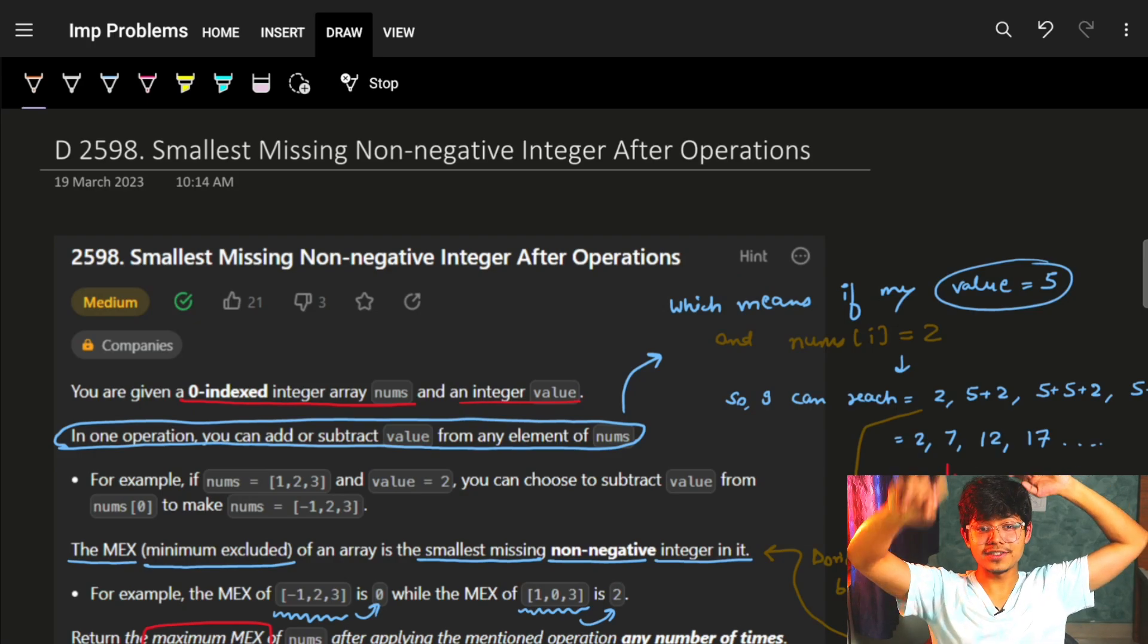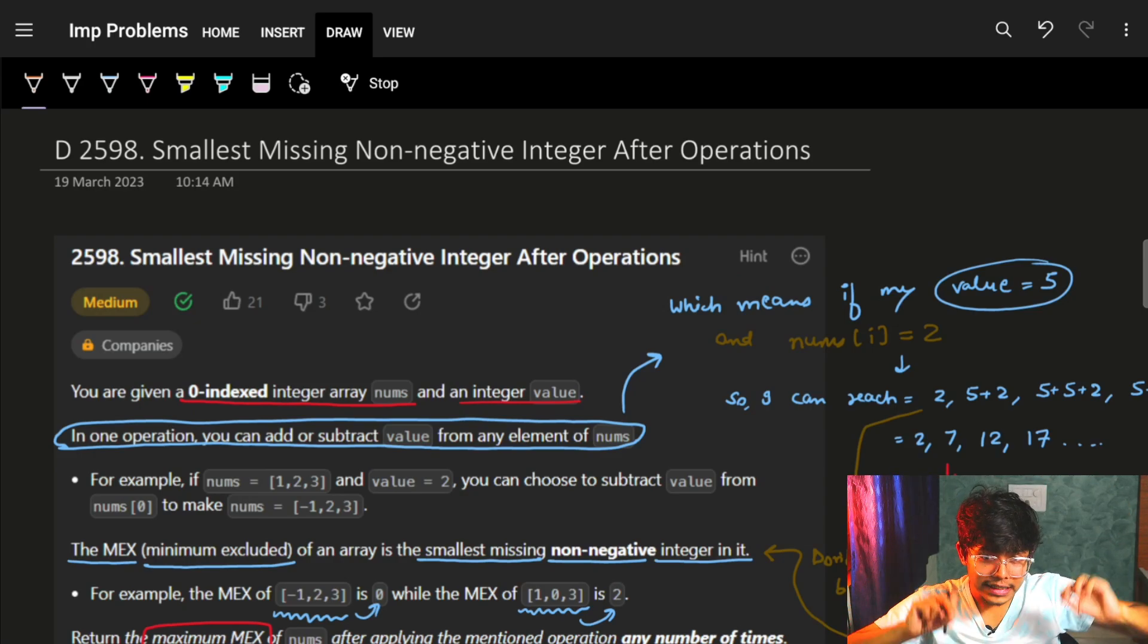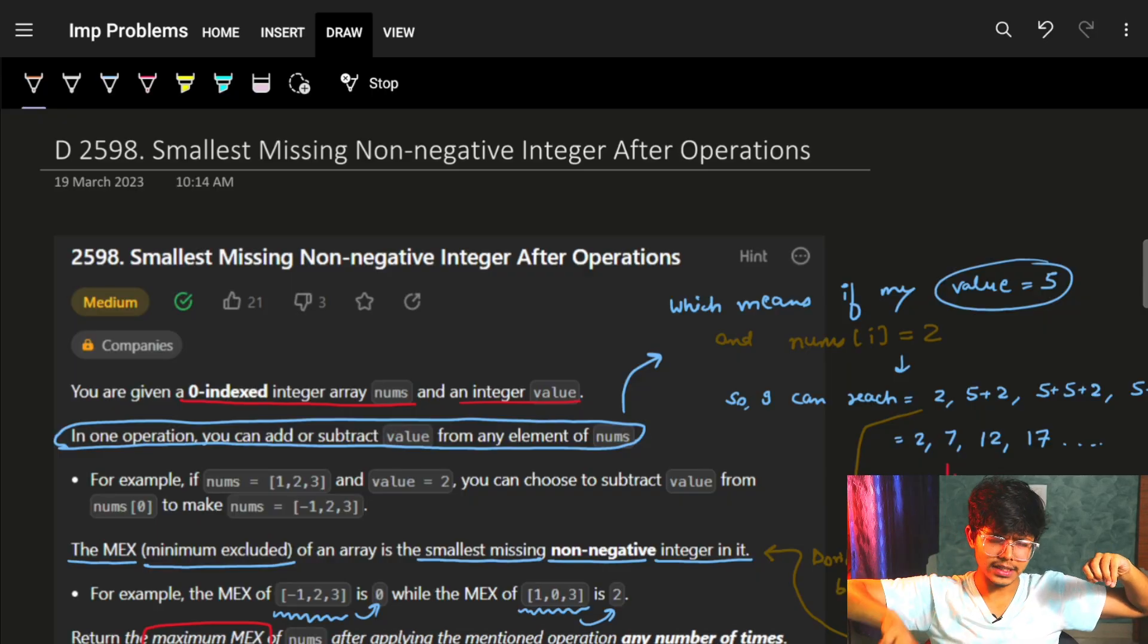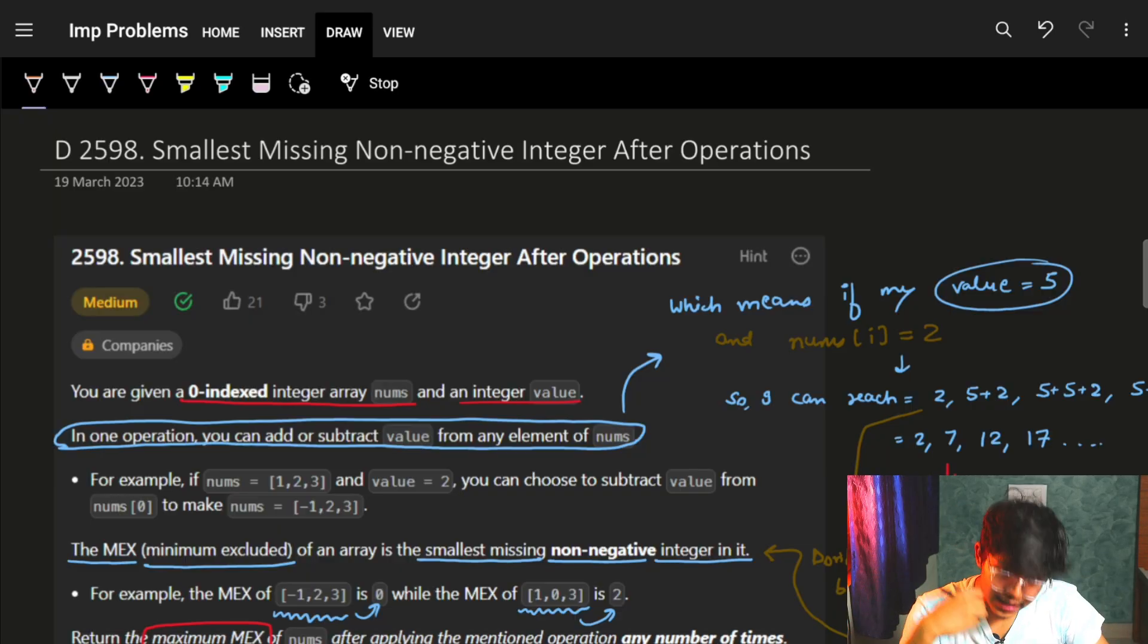Hi guys, good morning. In this video we are going to see the problem of the smallest missing non-negative integer after operation. It's a pretty easy problem. I guess it is very easy. It's just how we think and approach this. Let's see the problem quickly.